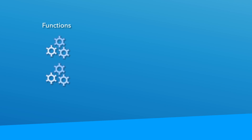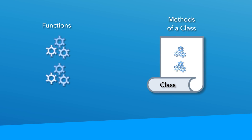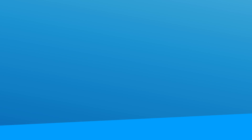Let's illustrate this in a diagram. First we had functions, then we put them inside of a class and now they're called methods. I want to talk about variable scope for a second. In the last lesson you learned that declaring a variable inside of a function means it only exists within that function's scope. For instance, if we declared a variable called name in function A, we can't access that name variable in function B because function B has its own scope.